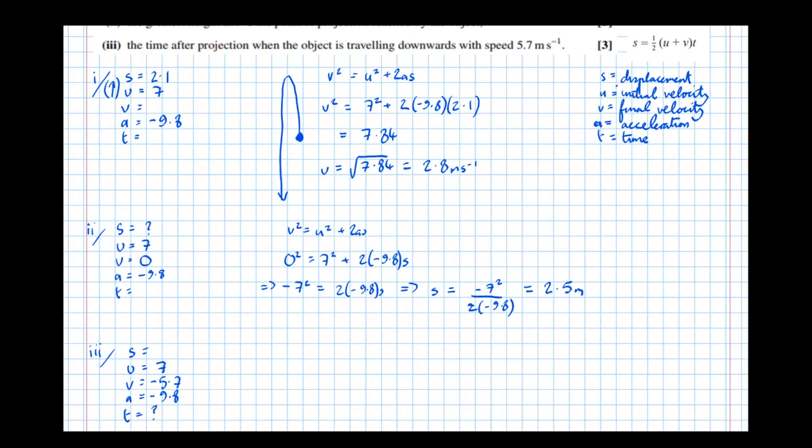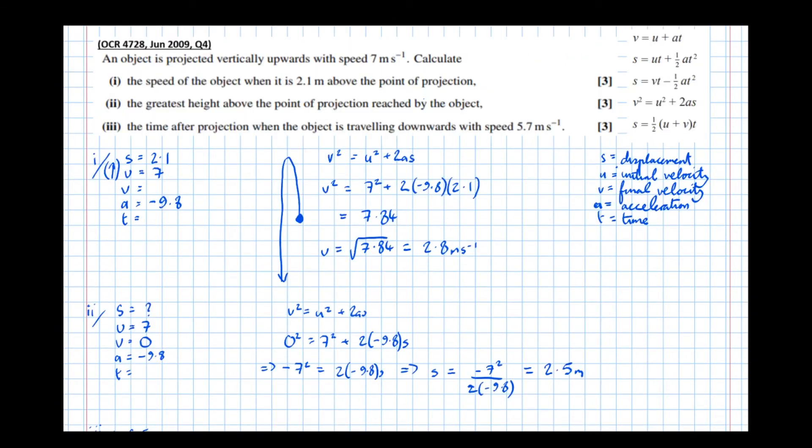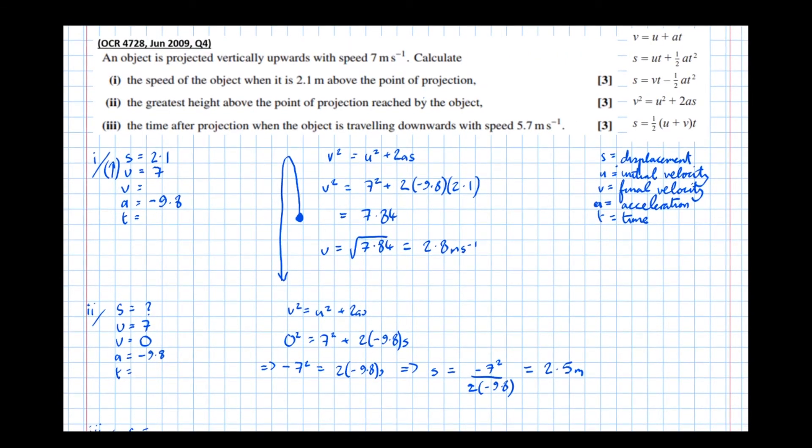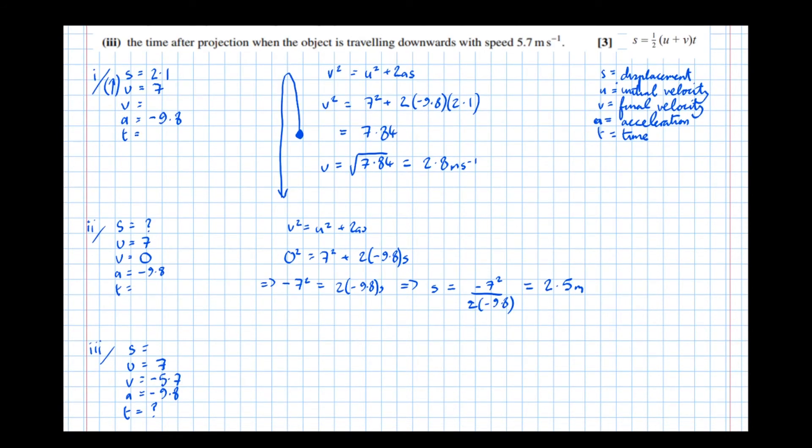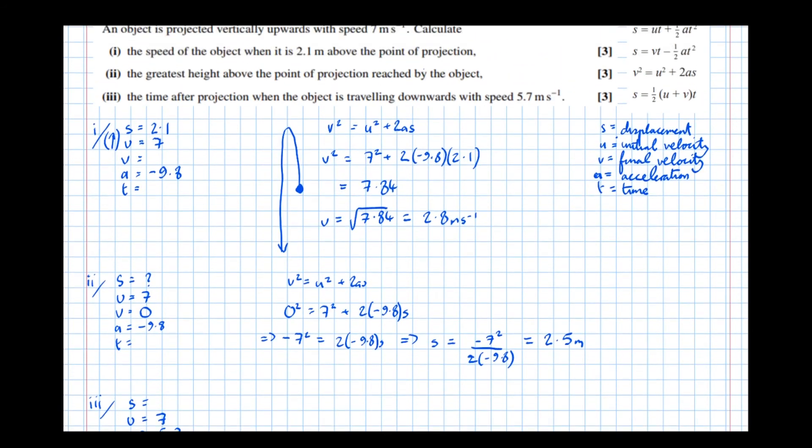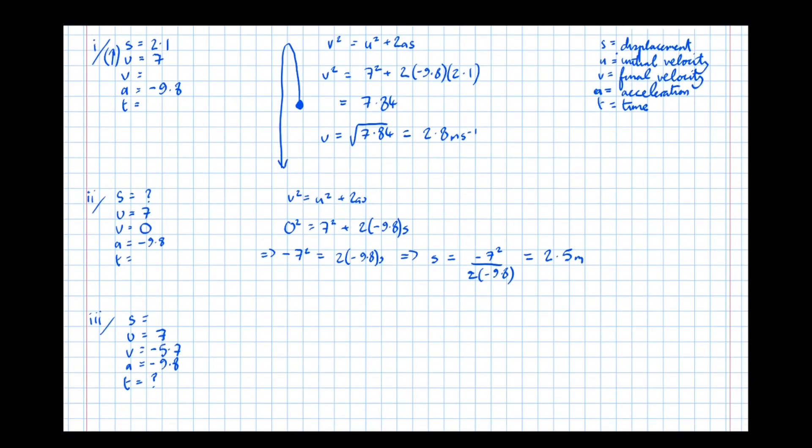So having a look at which equation might fit the bill, we can see it's v equals u plus at. The reason for that is we've got v, we've got u, we've got a, and there's one unknown, we're trying to find t. So v equals u plus at is the equation we're going to use.